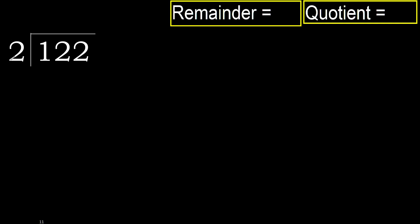122 divided by 2. 1 is less, therefore next. 12 is not less, therefore with 12: 2 multiplied by which number is nearest to 12 but not greater?